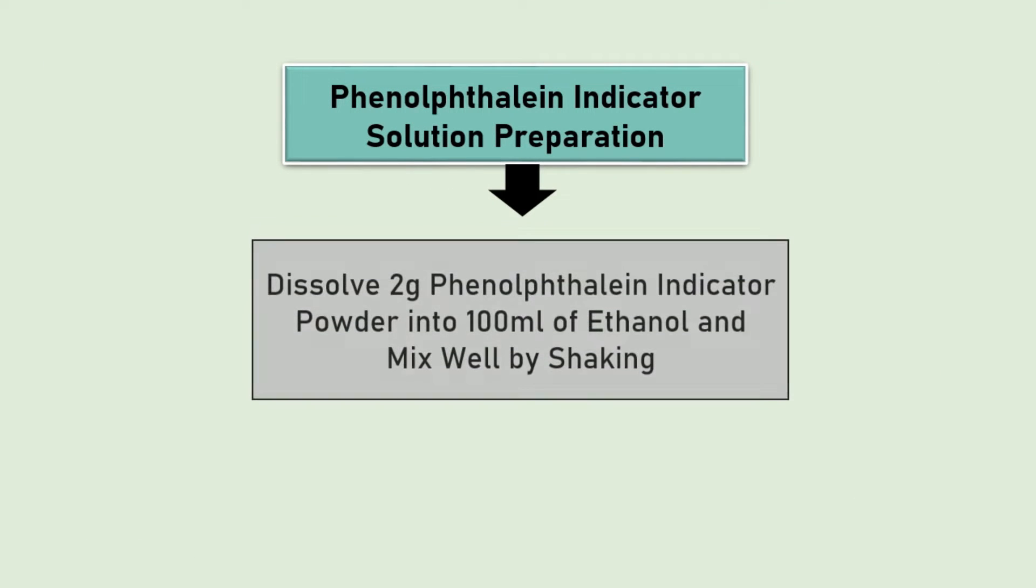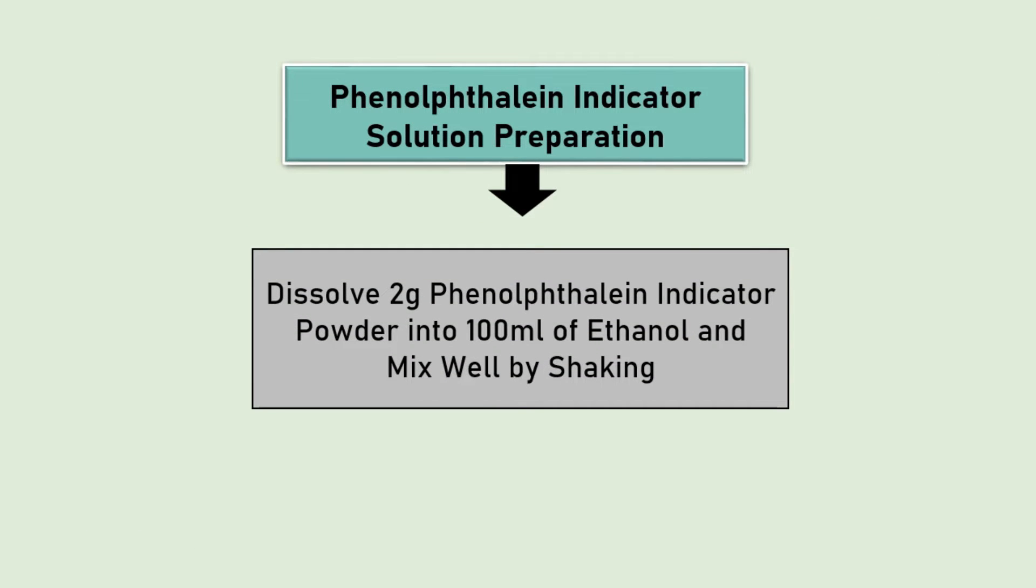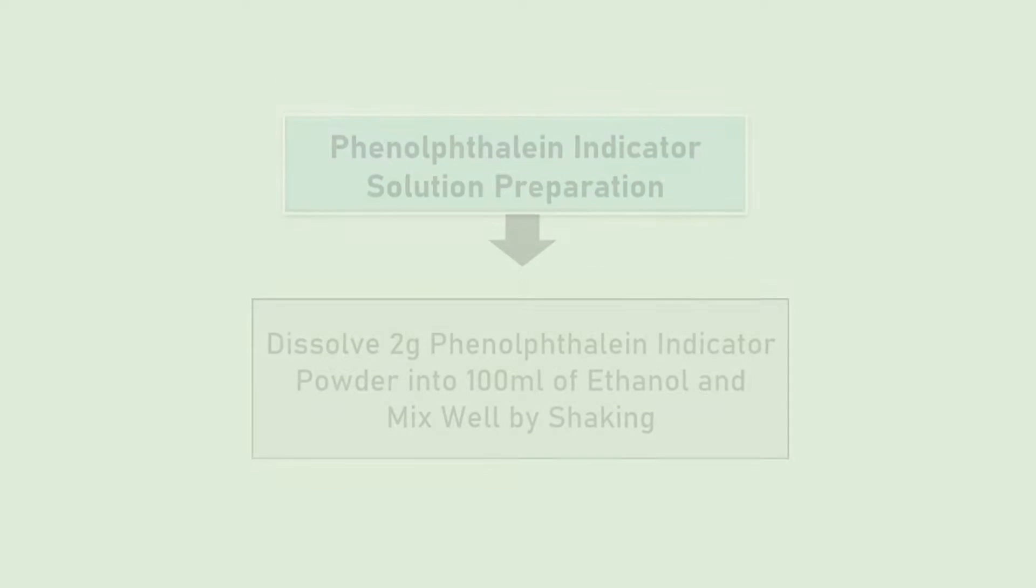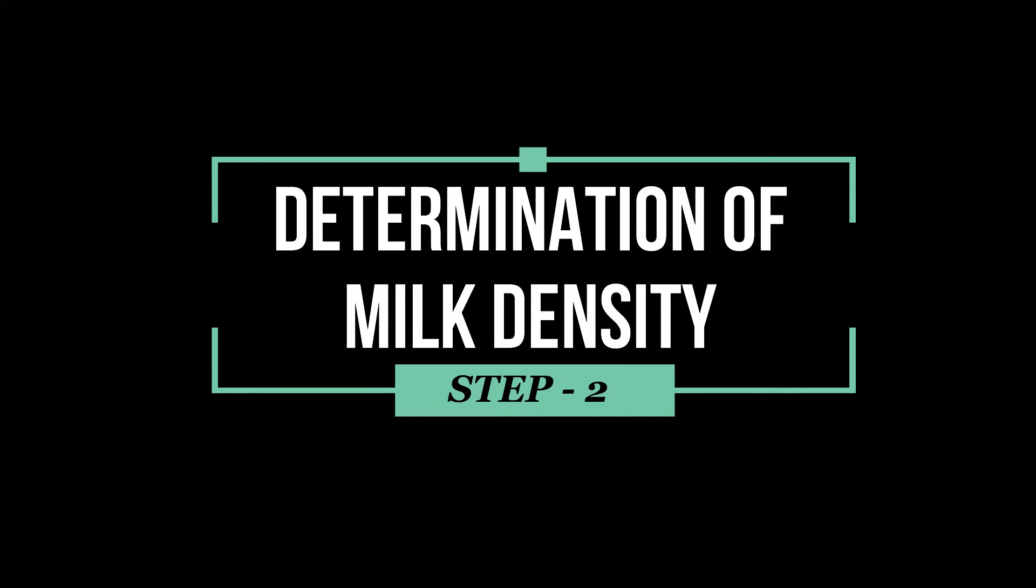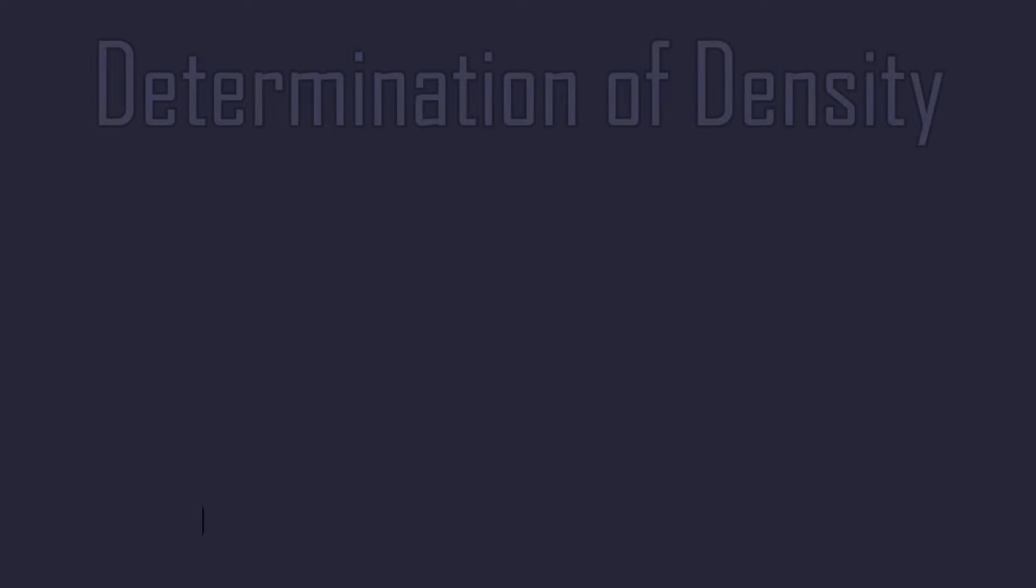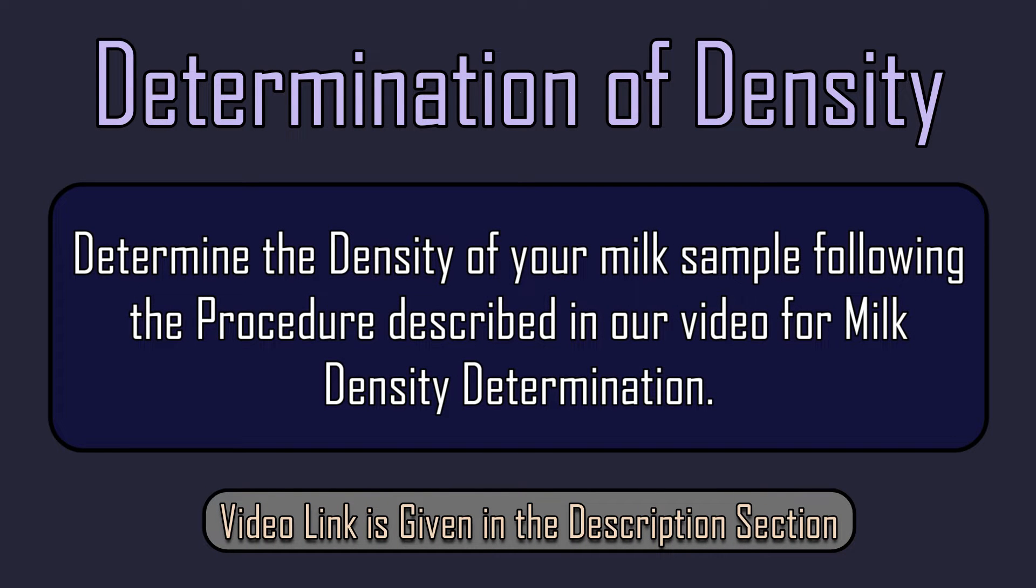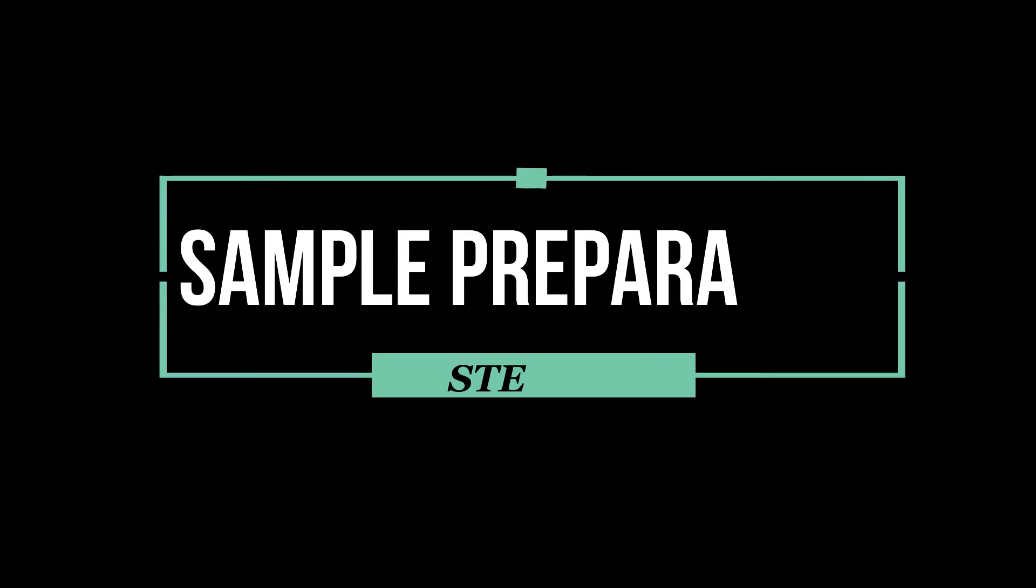We can prepare phenolphthalein indicator by simply dissolving 2 grams of phenolphthalein powder in 100 ml ethanol. Now determine the milk density by following our video for milk density determination. Video link is given in the description section.